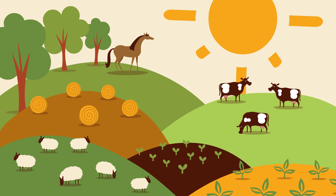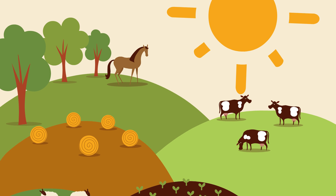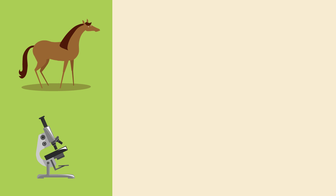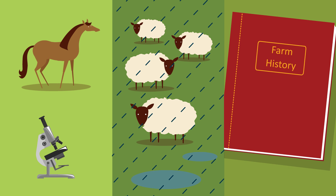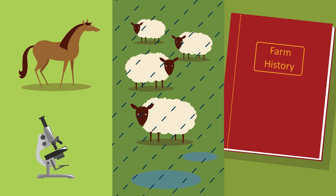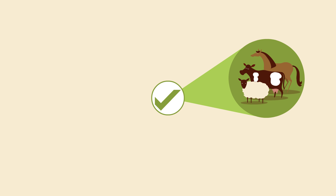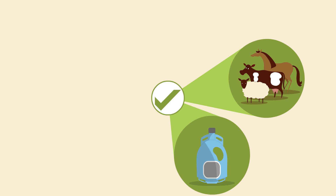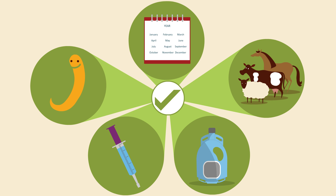Before you treat, you should make best use of all available information regarding your animals and consider your management options — diagnostic information, climatic conditions, and management. When you treat, be sure to treat the right animals with the right anthelmintic at the right dose for the right worm at the right time of the year. By following these approaches, you will slow down the development of anthelmintic resistance and prolong the efficacy of the current products.